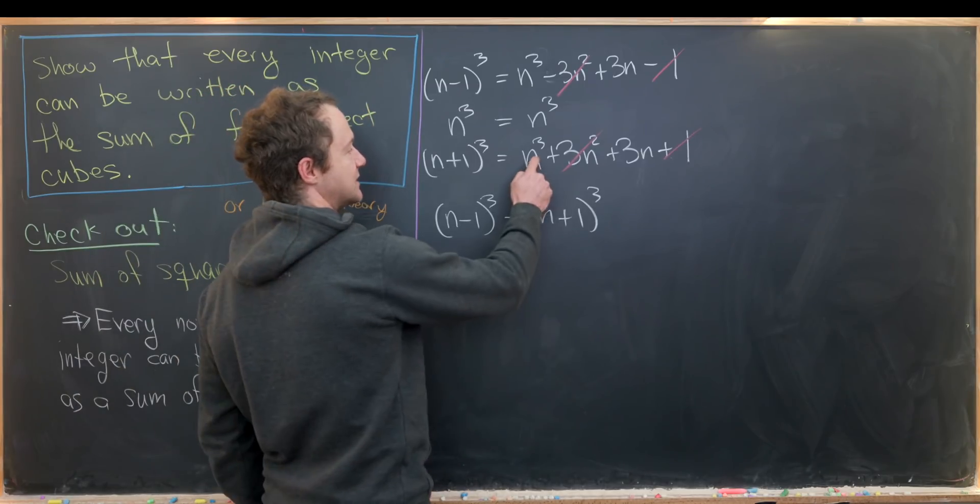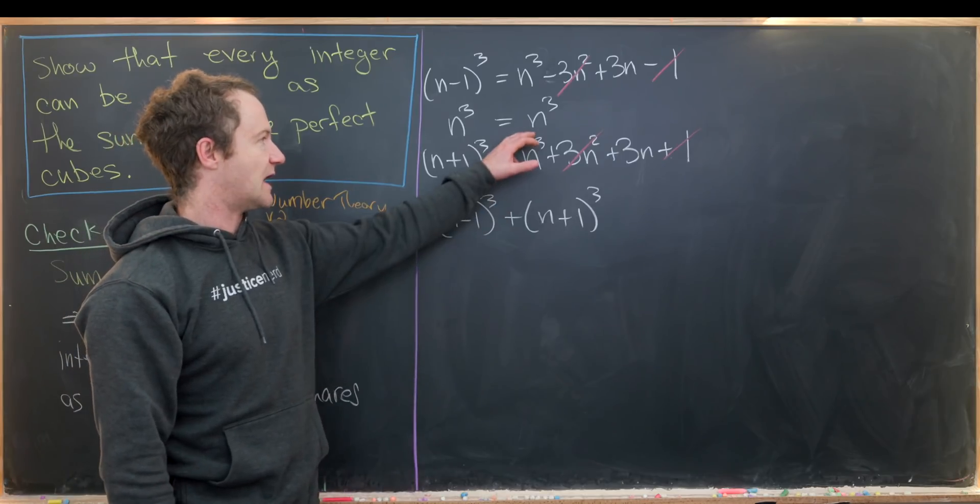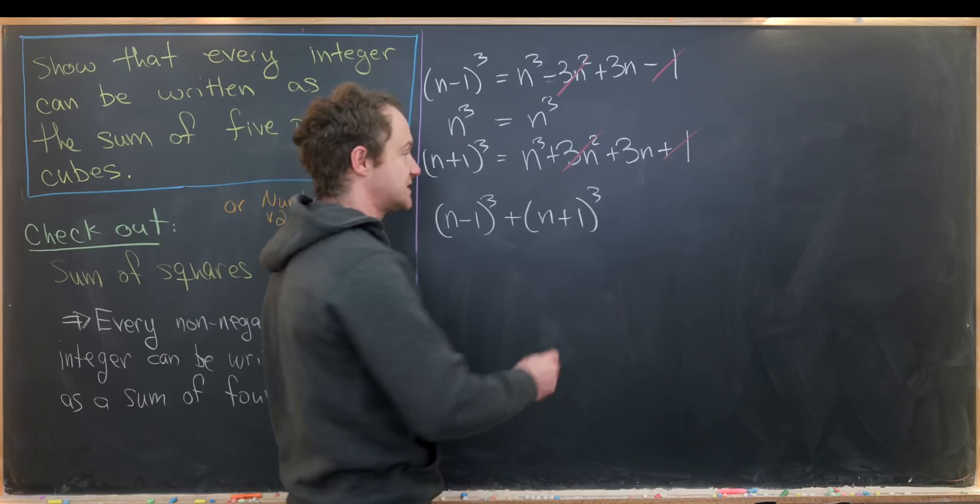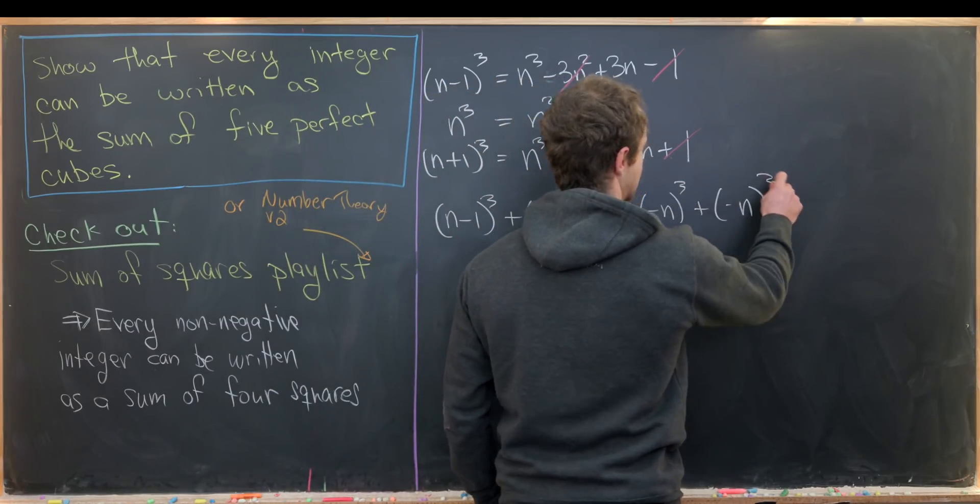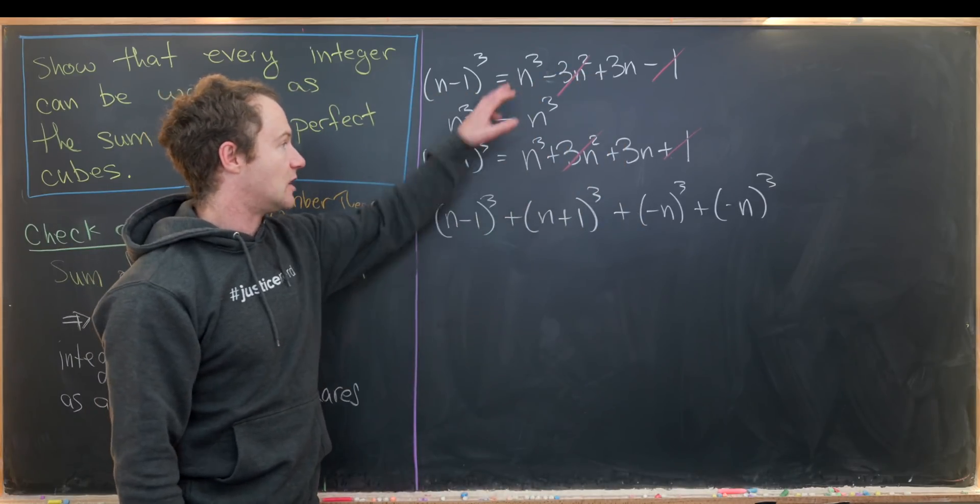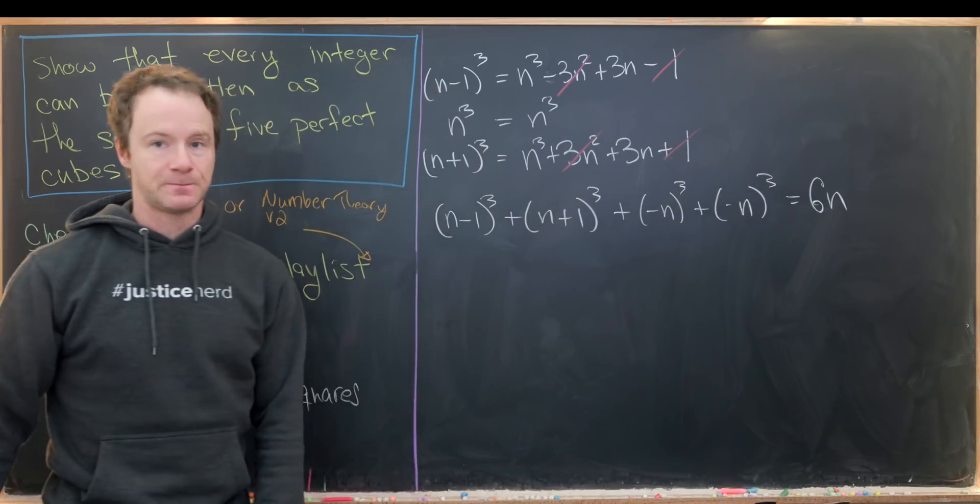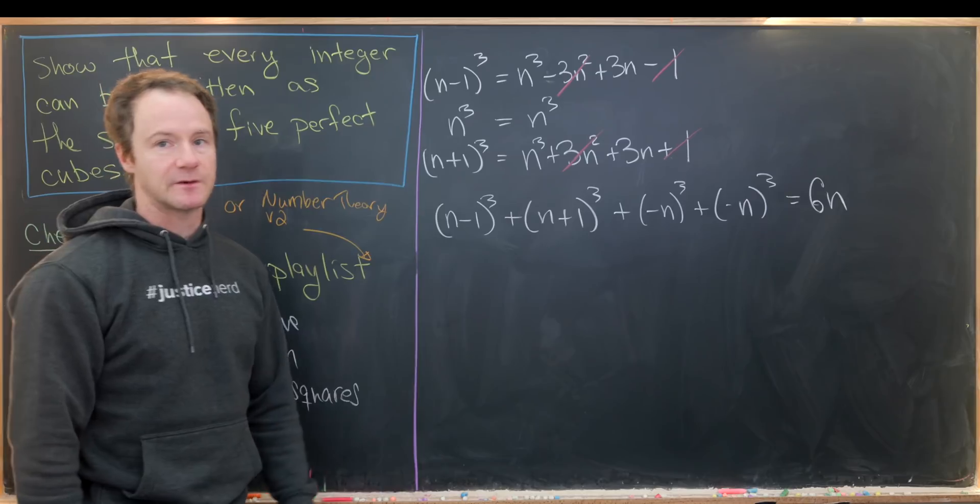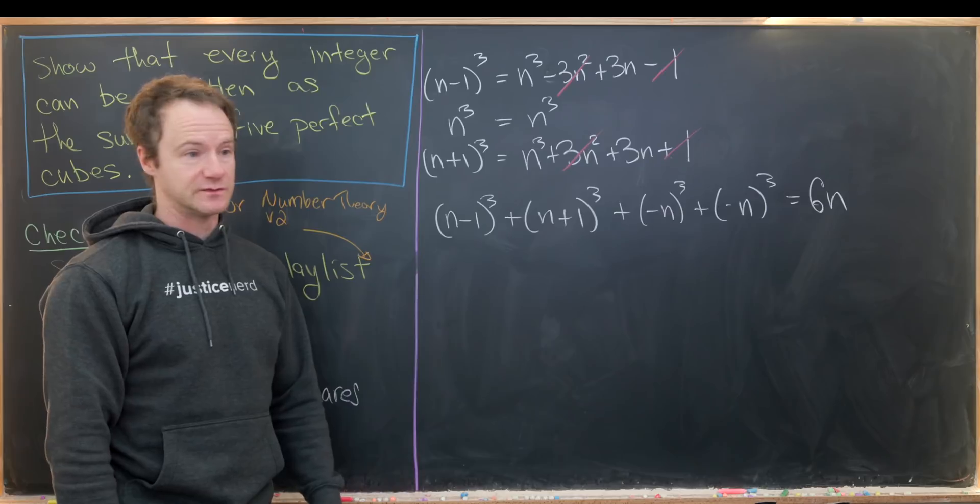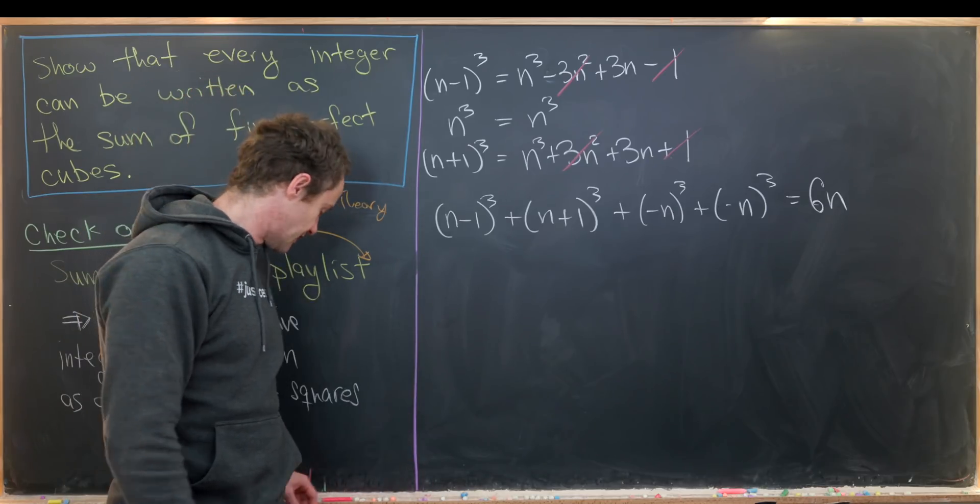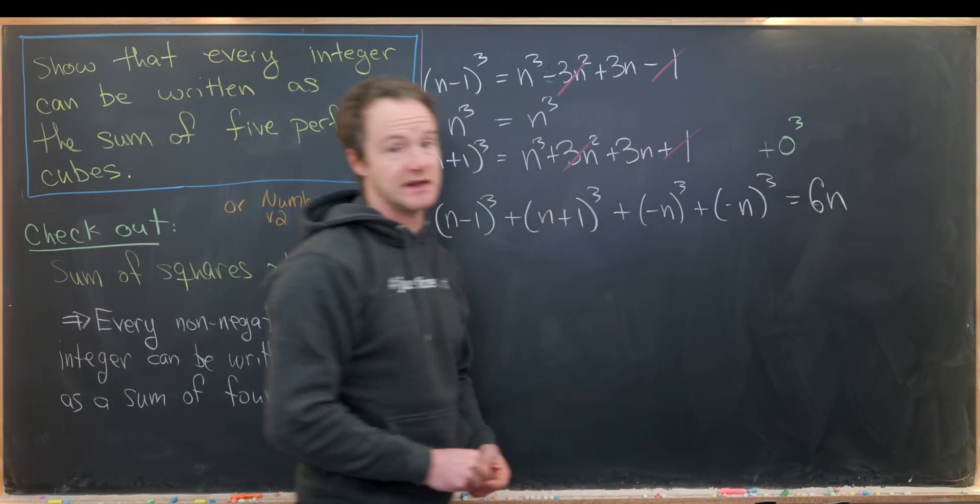Notice we'll build up two of these n cubes, but we can take care of those by adding minus n³. So we'll do plus -n³ plus -n³. That'll cancel all the n³ terms, but in the end it will leave us with 6n. We've written 6n as a sum of four perfect cubes, and we could very trivially expand this to a sum of five perfect cubes just by doing plus 0³ if we needed to.